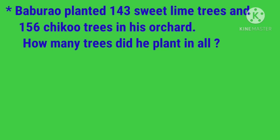Next: Babu Rao planted 143 sweet lime trees and 156 chikku trees in his orchard. How many trees did he plant in all? What information is given? Number of sweet lime trees and number of chikku trees. What is asked? Total number of plants he planted. What method should be used? In the question 'in all' means addition.